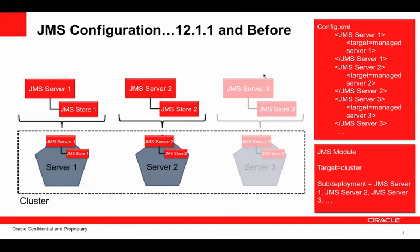For example, in a WebLogic cluster, if you wanted to host JMS queues or topics on your clustered servers, you needed to configure an individual JMS server and store for each managed server. It was a very explicit and intentional configuration. And of course, with so many JMS servers to keep track of, sub-deployments — that is the targeting of queues and topics to JMS servers — was more complex. Scaling out the cluster was equally challenging. Each new managed server required its own JMS server and store configuration, and sub-deployments needed to be updated to account for the configuration change.